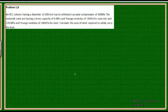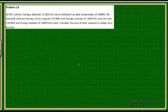Here we have a different type of problem involving a composite material. A composite material like concrete — reinforced cement concrete (RCC) — which has both concrete and steel acting as a single unit. That's what is called a composite material.